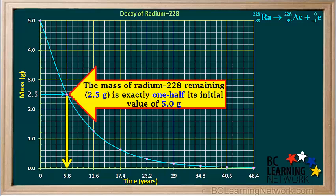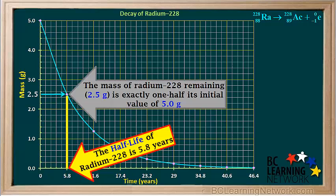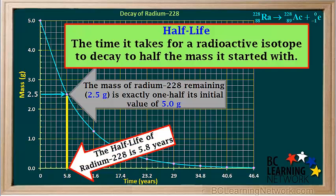We can see that after 5.8 years, the mass of radium-228 remaining — the 2.5 grams — is exactly one half of the 5 grams that we started with. We say that the half-life of radium-228 is 5.8 years. In 5.8 years, we have exactly half as much radium-228 as we had to start with. So we can define half-life as the time it takes for a radioactive isotope to decay to half the mass that it started with.